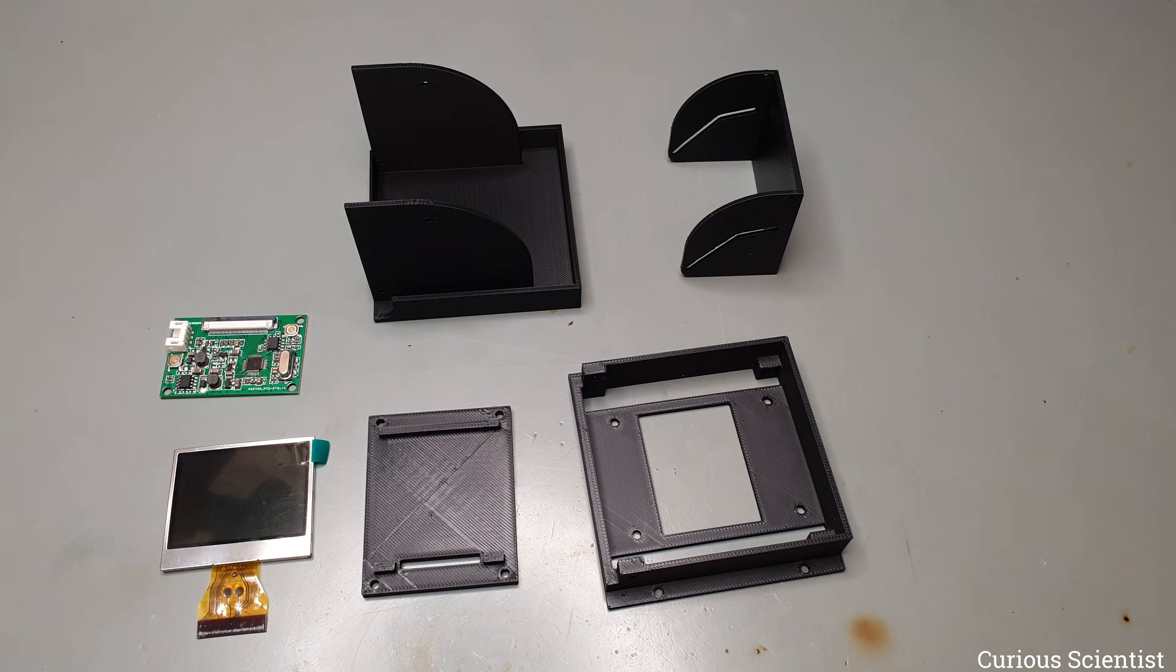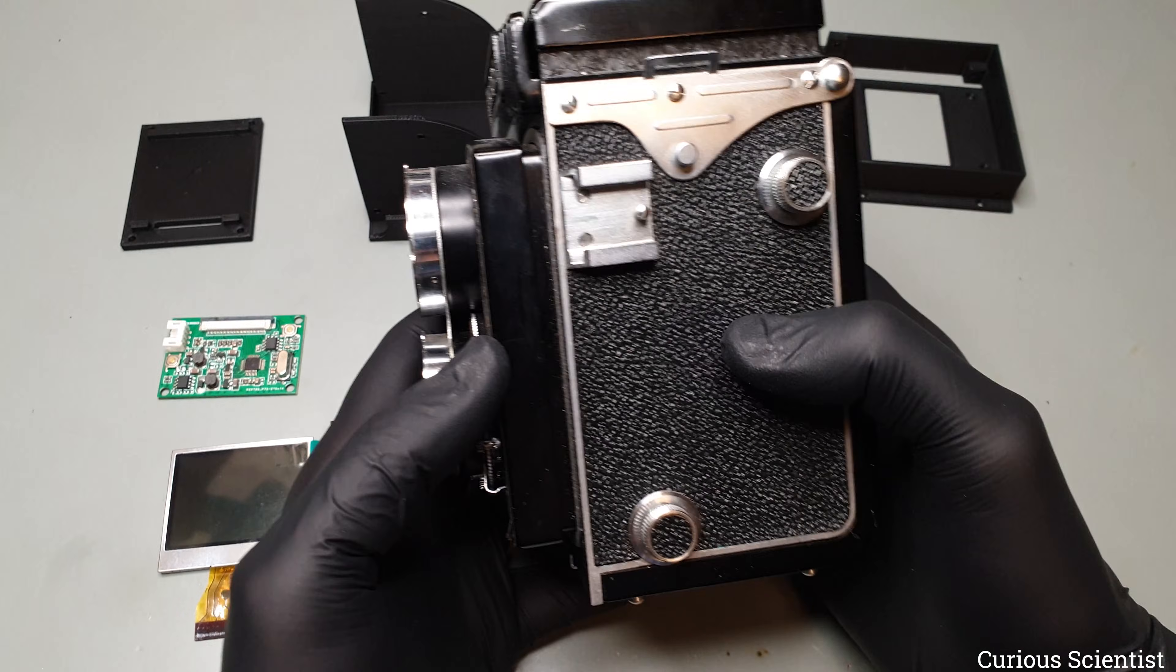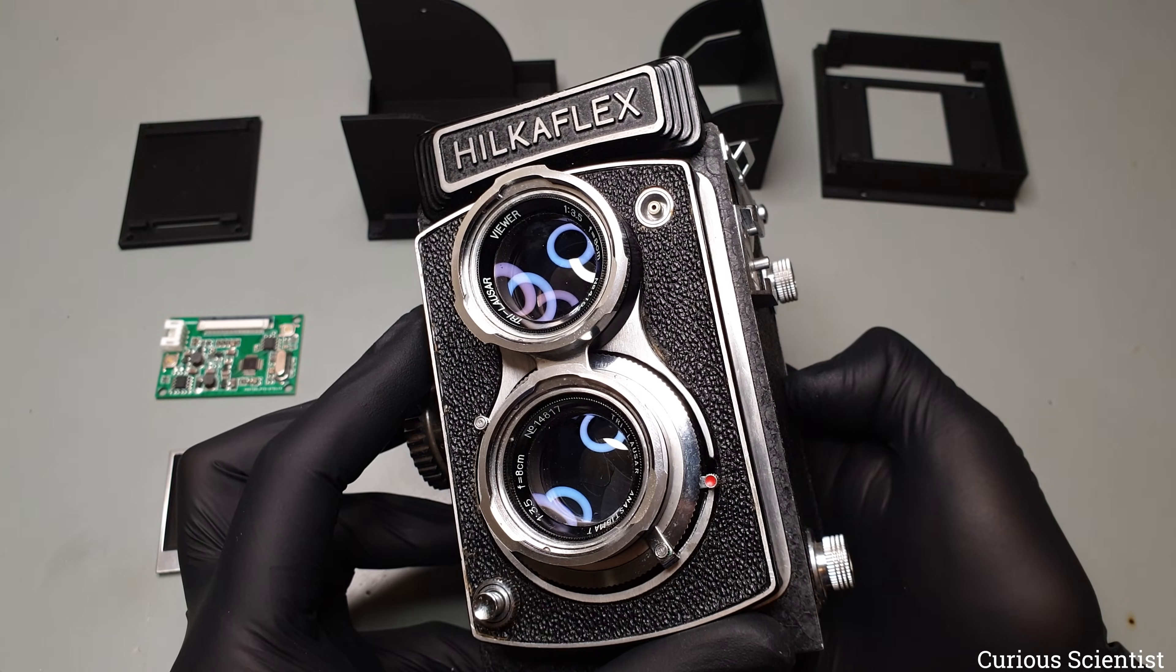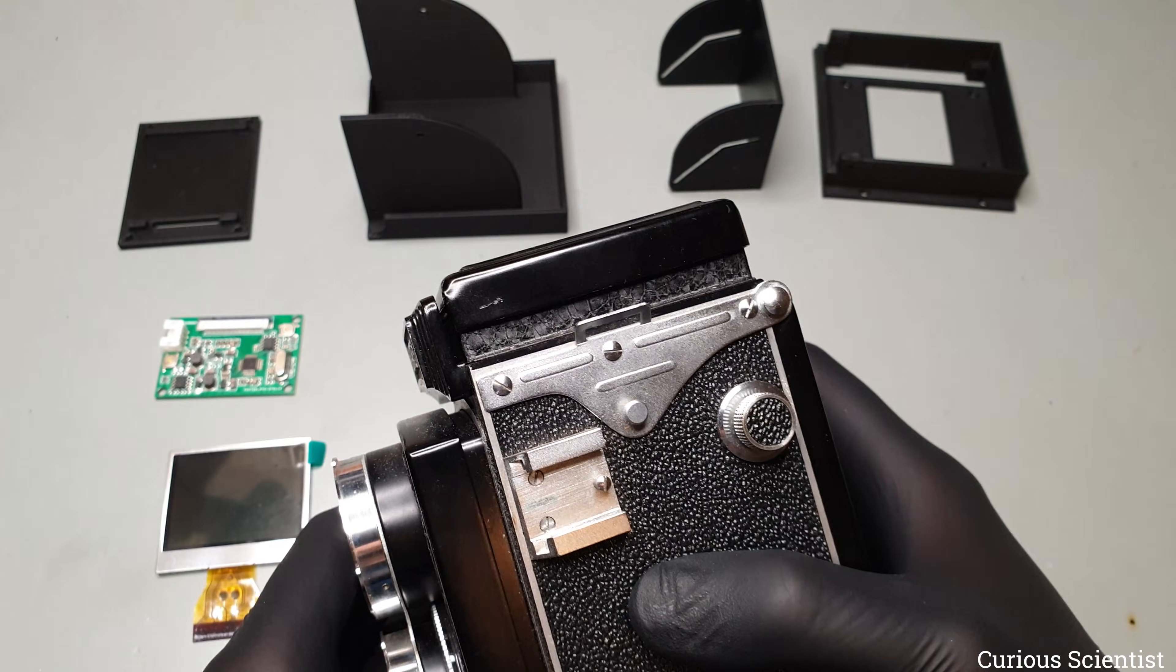Next we move on to the viewfinder. It accommodates this 2 inch display along with its controller module, and together with the 3D printed parts, it forms a fully collapsible viewfinder. I got the inspiration for the mechanism from one of my TLR cameras. I used the same basic concept, but adjusted the dimensions to fit this build.